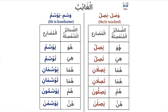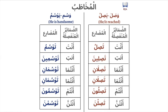Wasana (huwa) becomes yasilu, tasilu, yasilani, tasilani, yasiluna, yasilna — meaning 'he is reaching, she is reaching, they two (masc.) are reaching, they two (fem.) are reaching,' and so on. But for wasuma the waw stays: yawsumu, tawsumu, yawsumani, tawsumani, yawsumuna, yawsumna, and so forth — demonstrating how the waw is dropped in wasana but retained in wasuma according to the kasra rule.